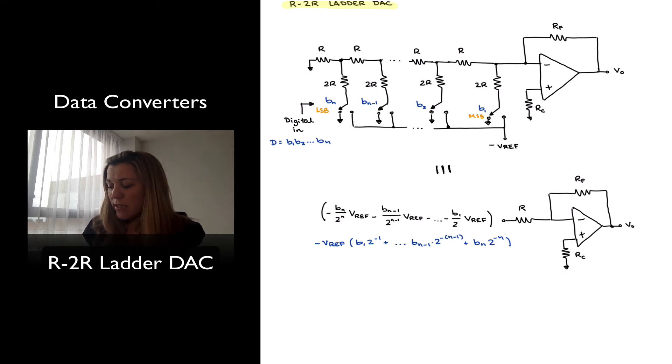Again, since this is a linear combiner circuit, I can calculate my output voltage as being equal to negative RF divided by R times that input voltage, which is a function of the reference voltage. My minus at the input, minus VREF, will cancel out with the other negative.